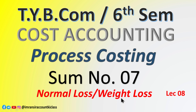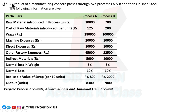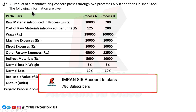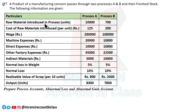This is the special aspect of today's video, so pay close attention. Question number seven: a product of a manufacturing concern passes through two processes, A and B, and then goes to the finished stock account. Raw material is introduced in both processes — note this carefully, as it will appear on the debit side. The cost of raw material per unit is given, so we simply multiply to get the total cost. Other expenses include wages, machine charges, direct and indirect material.